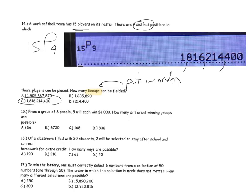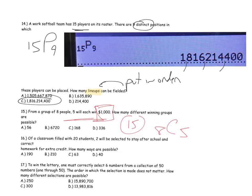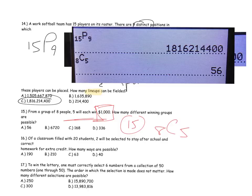Problem fifteen: from a group of eight people, five will each win $1,000. How many winning groups are possible? Again, since the prizes are all the same, order doesn't matter — winning the first $1,000 is the same as winning the fifth. So it's combinations: 8C5, or 56 ways.